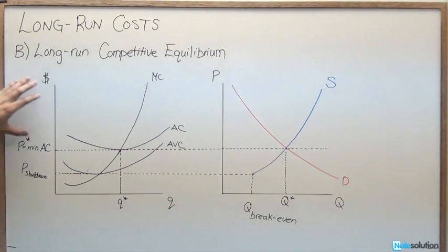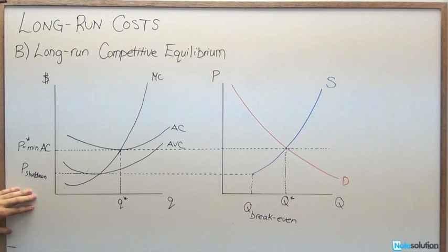So now we're going to look at long-run competitive equilibrium. The way to explain what exactly the long-run competitive equilibrium will be is by comparing it with what we saw before in the short run.